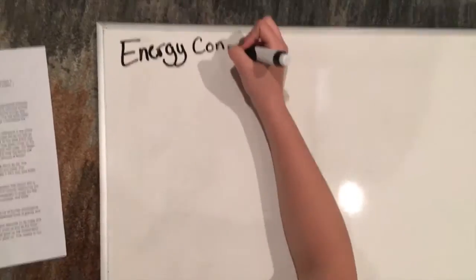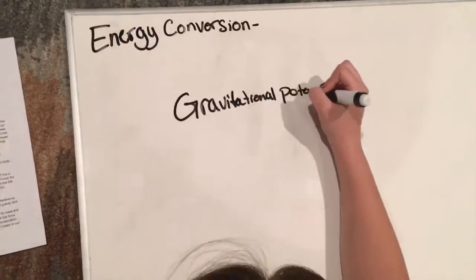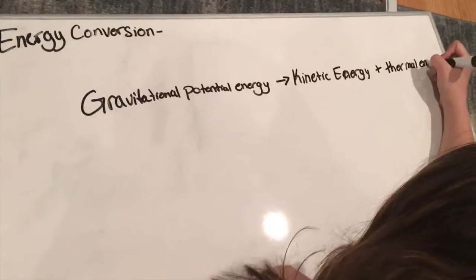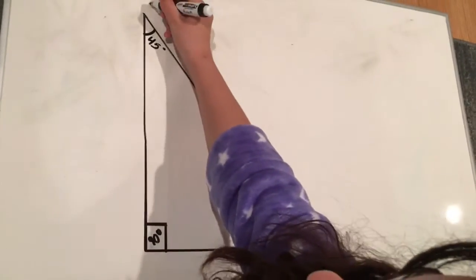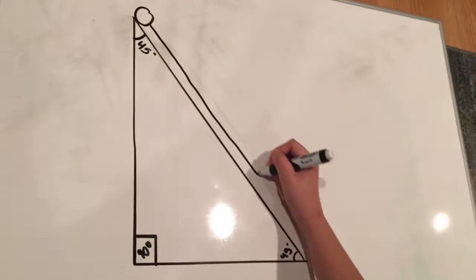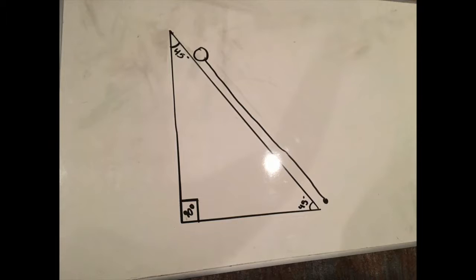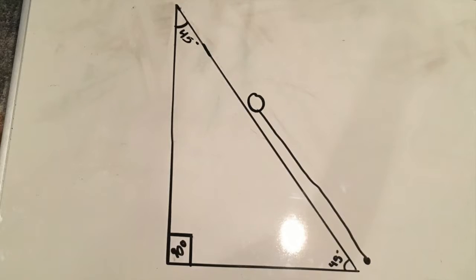Gravity makes the speed of the slide faster. The energy conversion is gravitational potential energy to kinetic energy plus thermal energy. Gravitational potential energy occurs when the ball is held at the top of the slide. The potential energy occurs when the ball is pulled down the slide by gravity.